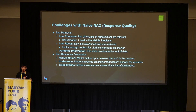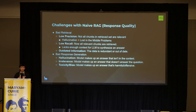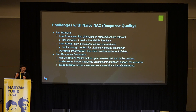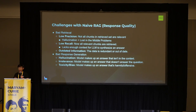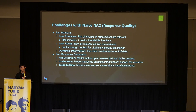Even if the retrieval itself is good, there are aspects where the LLM might fail — it might not generate the right response. There's hallucination, where the model makes up an answer that's not actually in the context. If your context is too long, the model might not be able to attend to what's in the context. There might also be toxicity or bias — stuff where the model makes up an answer that's harmful or offensive.